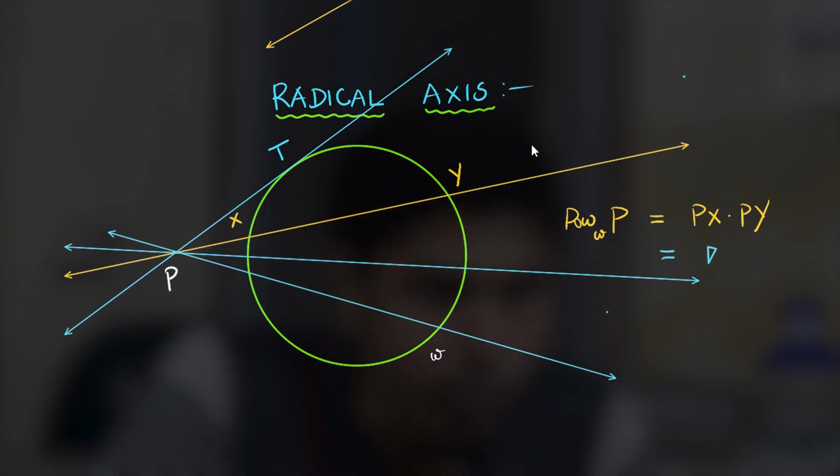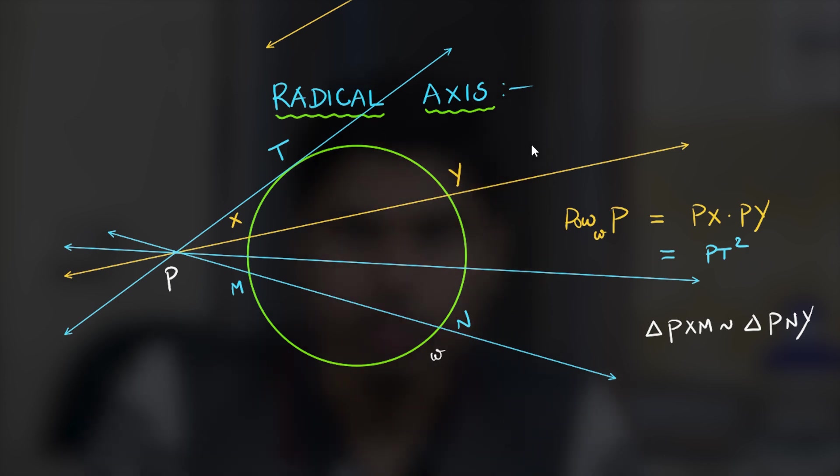So all these will be equal. As an exercise you may try to prove this and the hint that I could suggest is that triangle, let's call this point to be m and this point to be n, with the property that triangle Pxm is similar to triangle Pny you may conclude this result.